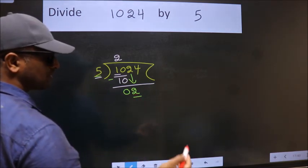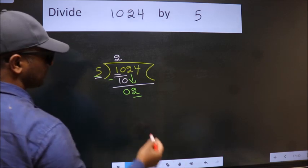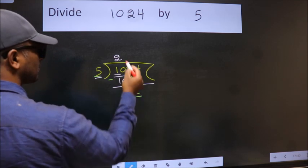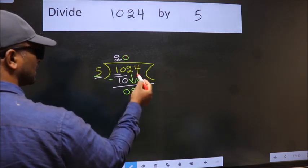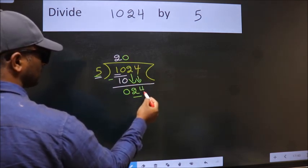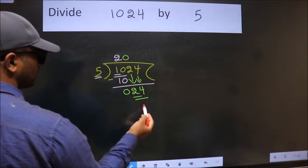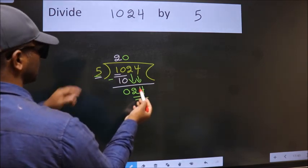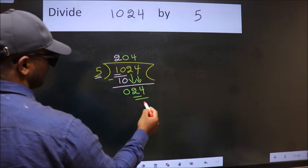So we should bring down the second number. And the rule to bring down second number is put 0 here. Then only we can bring this number down. So 24. A number close to 24 in 5 table is 5 times 4 is 20.